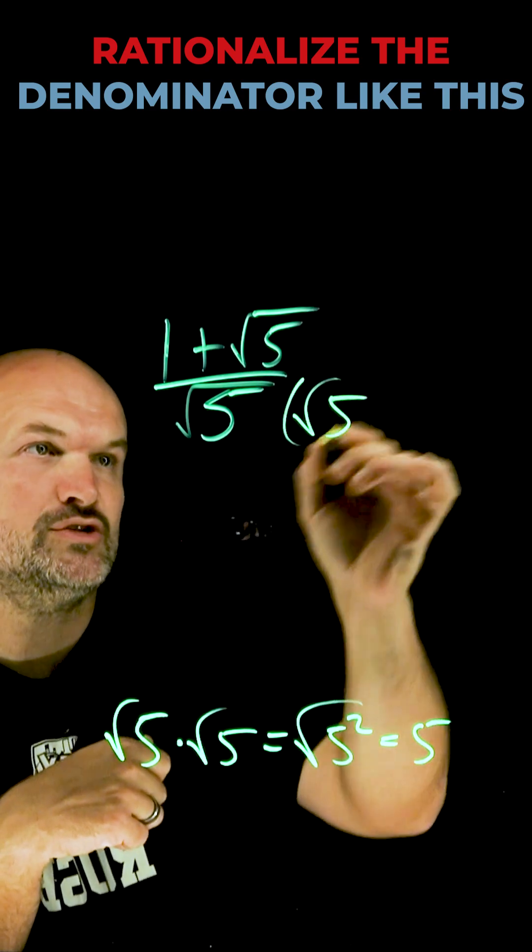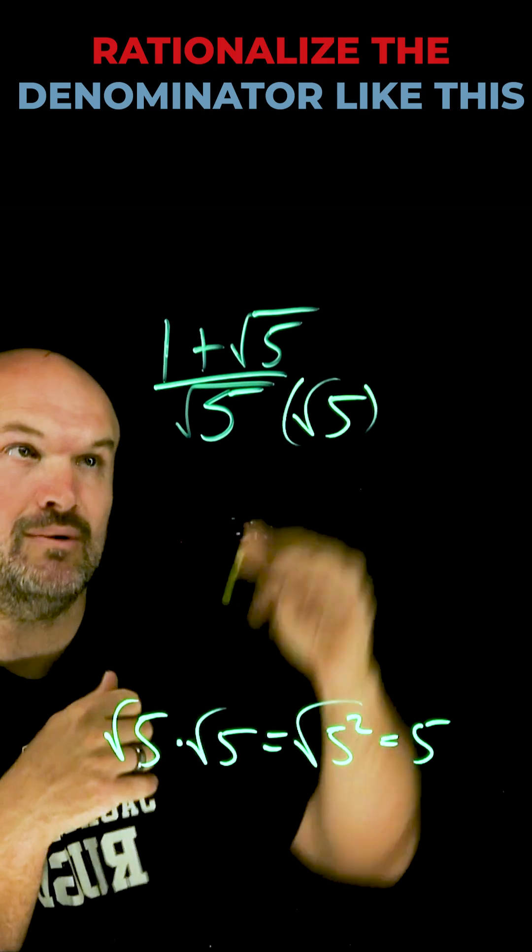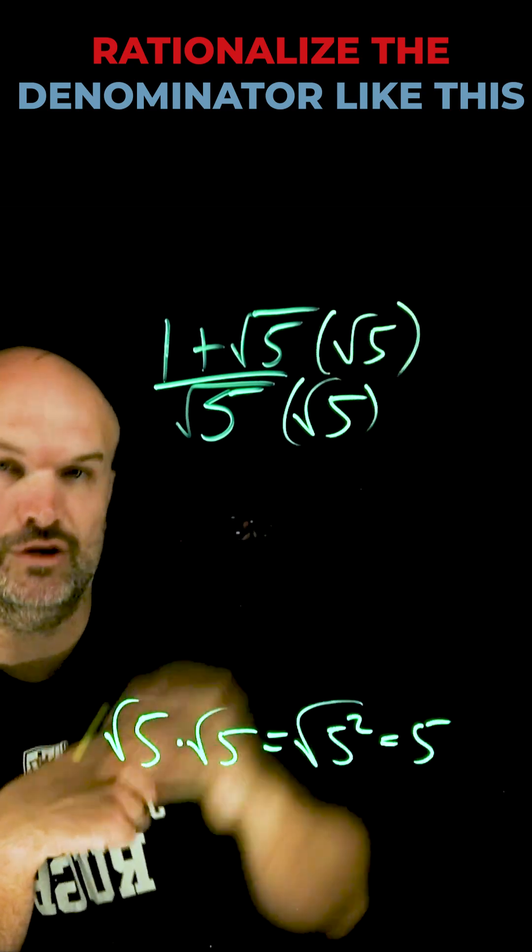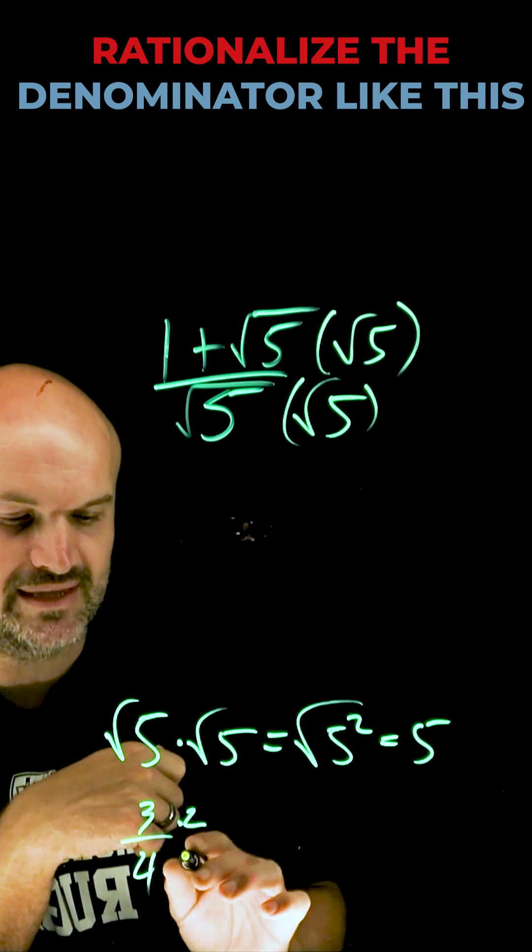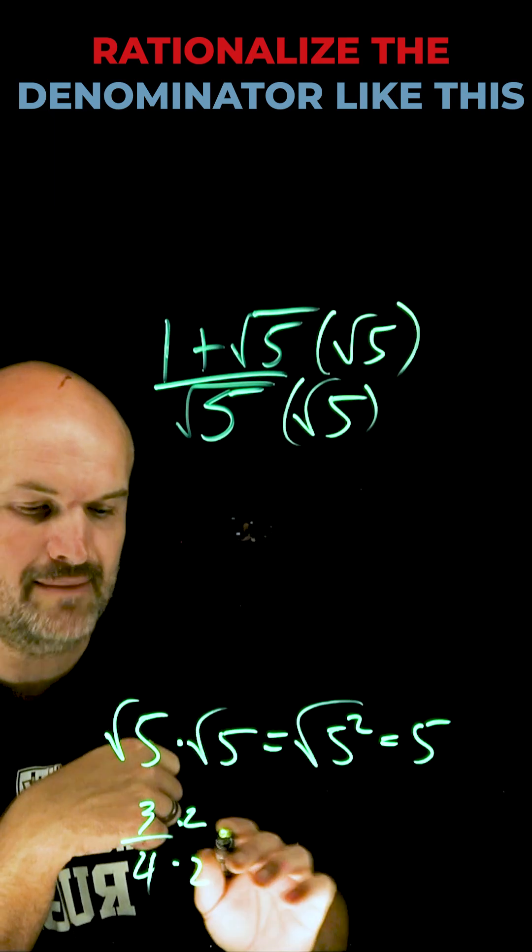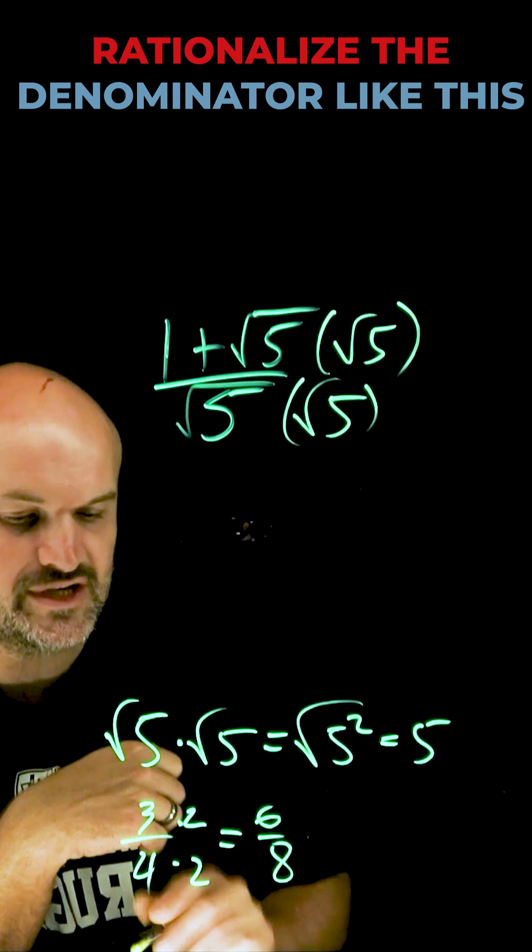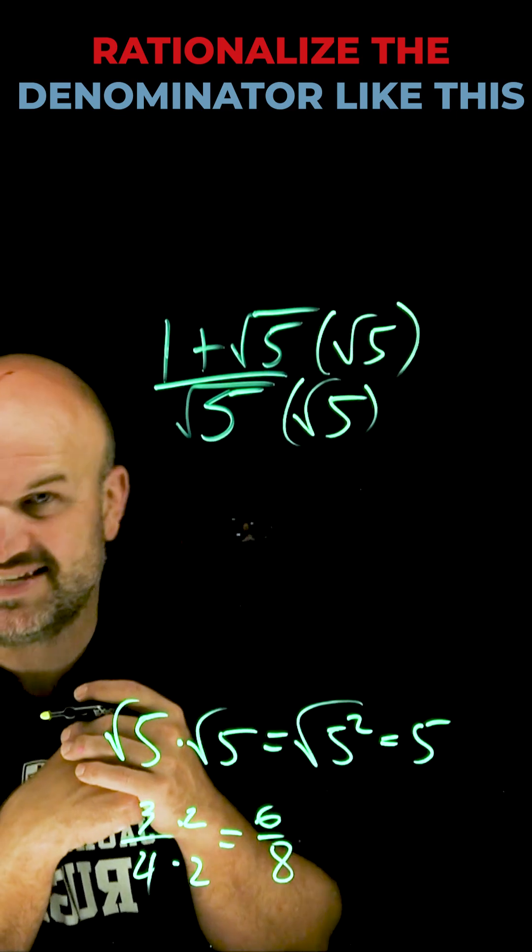So I need to make sure I multiply by the square root of five in the denominator, but also I need to make sure I multiply by the square root of five in the numerator because I need to produce what we call equivalent fractions. As long as I multiply the same number in the numerator and the denominator, I produce an equivalent fraction. Three-fourths is equivalent to six-eighths.